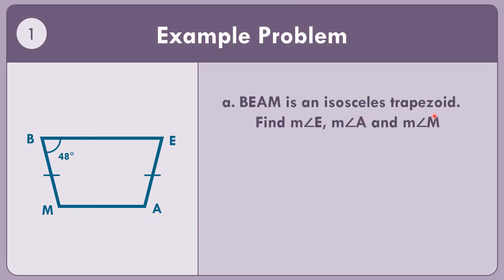BEAM is an isosceles trapezoid. Find the measurement of angle E, angle A, and angle M, given that the measure of angle B equals 48 degrees. Let us find first the measurement of angle E. Since base angles are congruent, the measure of angle E is congruent to the measure of angle B, which is 48 degrees. So the measure of angle E equals 48 degrees.